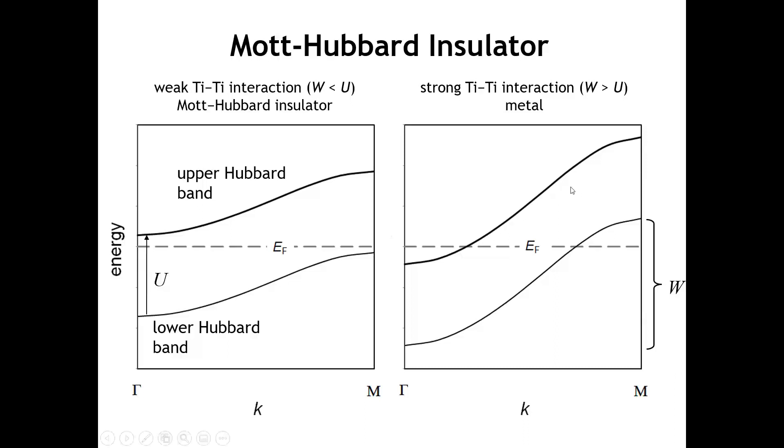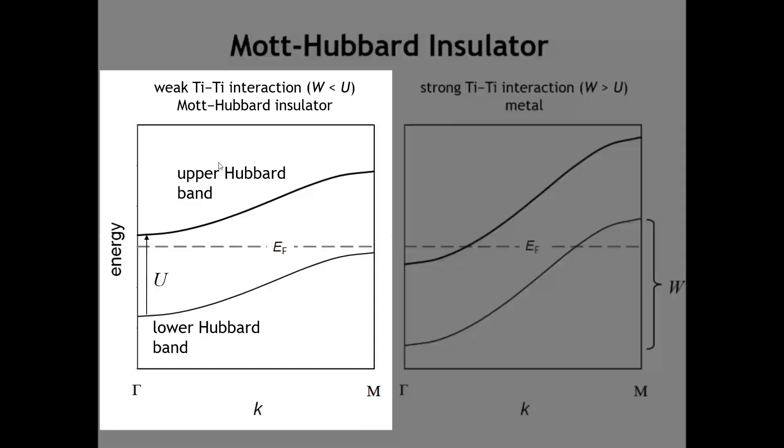Here are two extremes. If the titanium atoms were pretty far apart or their interaction was weak, we get relatively narrow bands. If the bandwidth is smaller than the Hubbard U, then it's like we have a gap. The on-site repulsion, the Hubbard U, is bigger than the bandwidth. That leads to a filled band and an empty band, giving us a gap. We get an insulator called a Mott-Hubbard insulator because it is insulating due to electron-electron repulsions.